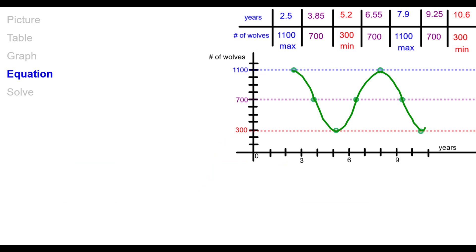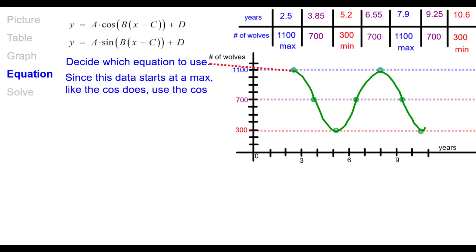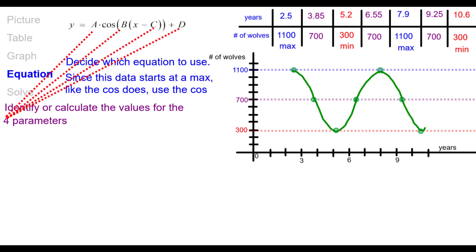Now we're ready to get the equation from the graph. These are our two general equations. We need to decide which one we want to use, and we could use either one. It doesn't matter. It's up to you. It's preference. Since this seems to start at a maximum, I'm going to go with a cosine curve. So I'm going to use that first equation instead of the sine equation. What I need to do now is identify or calculate the values for the four parameters, A, B, C, and D.